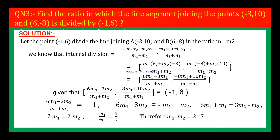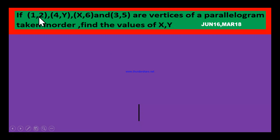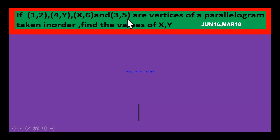Now let us look at question number 4. If (1, 2), (4, Y), (X, 6), and (3, 5) are the vertices of a parallelogram taken in order, then find the values of X and Y. This question is also one of the important questions.